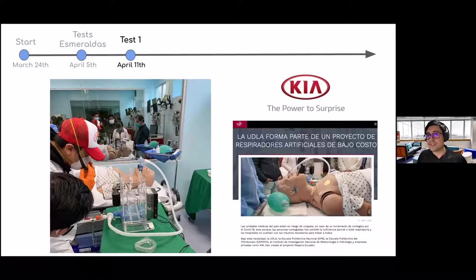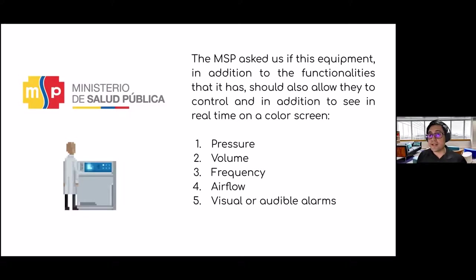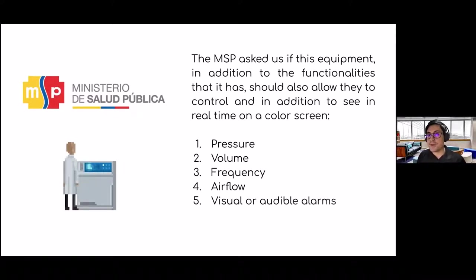On April 11th, we ran the first test in the capital city. But at that moment, since the Ecuadorian legislation did not yet have a document or law providing guidelines for emergency mechanical ventilators, we could not get official approval. The device was evaluated based on doctors' and paramedics' experience, and they determined the device needed additional functionality — such as seeing pressure, volume, frequency, airflow, and visual or audible alarms on a color screen in real time.